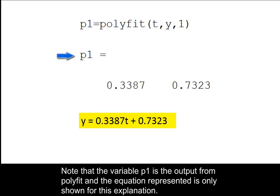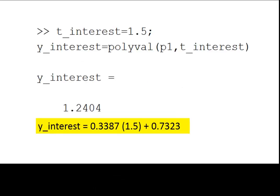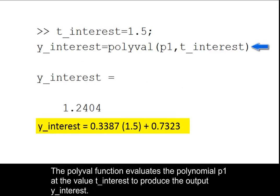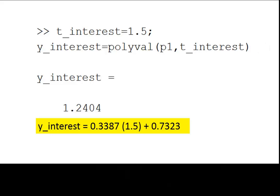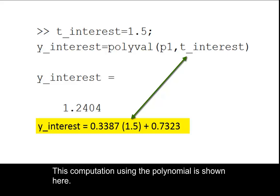Note that the variable p1 is the output from the polyfit and the equation represented is only shown for this explanation. The polyval function evaluates the polynomial p1 at the value t interest to produce the output y interest. This computation using the polynomial is shown here.